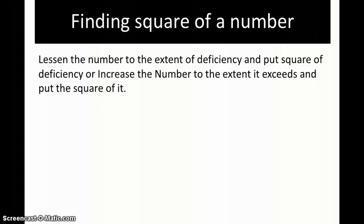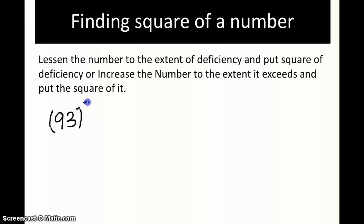Let's find out the square of a number and see how it is applicable. Let's take the case of 93. So, 93 is 7 less than 100. To find the square, the rule says lessen the number to the extent of the deficiency from the base. The base here is 100, so the deficiency is 7.